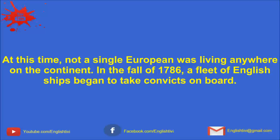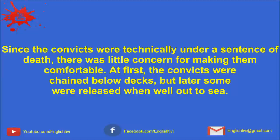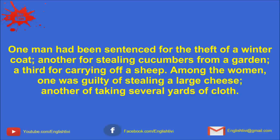In the fall of 1786, a fleet of English ships began to take convicts on board. This process continued till the sailing date of May 13, 1787. Many British jails had been cleared of both male and female prisoners. Since the convicts were technically under a sentence of death, there was little concern for making them comfortable. At first, the convicts were chained below decks, but later some were released when well out to sea. One man had been sentenced for theft of a winter coat, another for stealing cucumbers from a garden, a third for carrying off a sheep.